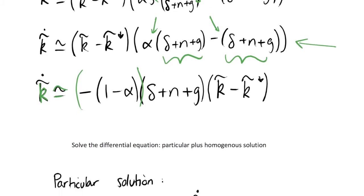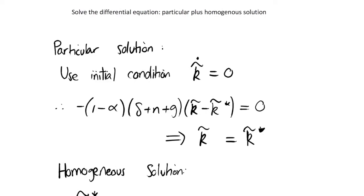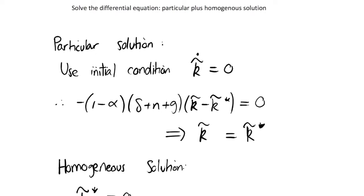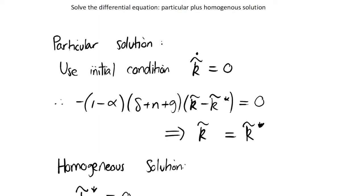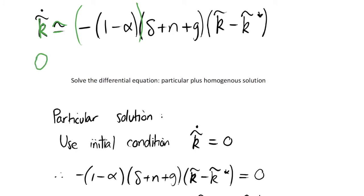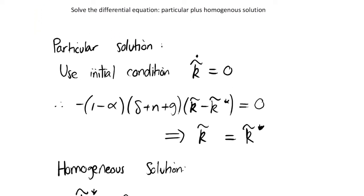The way we go about solving this differential equation is we find the particular solution and add that together with the homogeneous solution. In order to calculate our particular solution, we're going to use our initial condition — that we're at steady state and our evolution of capital is equal to zero. Plugging that in equals zero, the only way this equation holds, given that our parameters are not equal to zero by assumption, is that k̃ equals k̃*, i.e. we're at steady state. That's our particular solution.